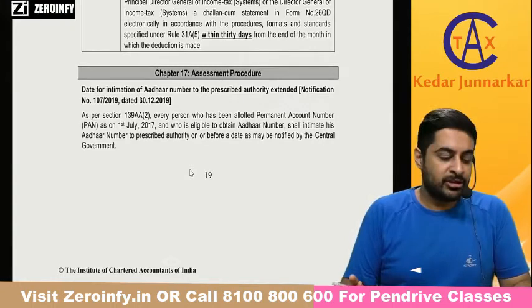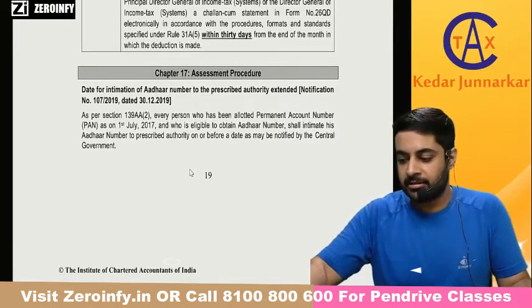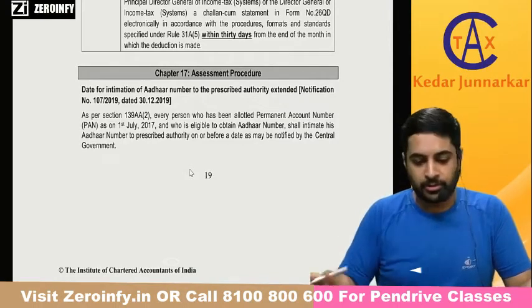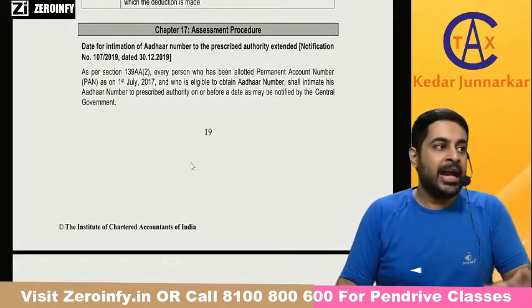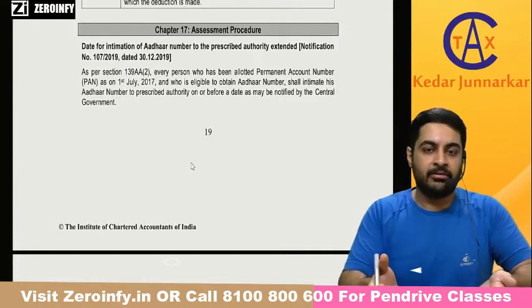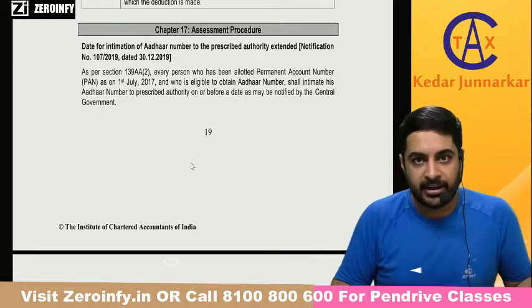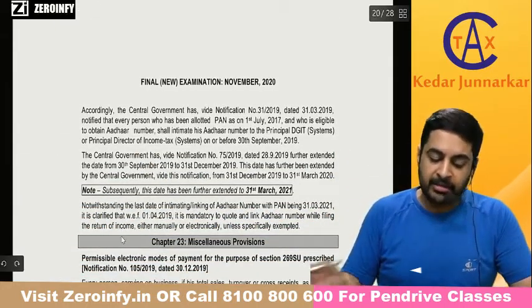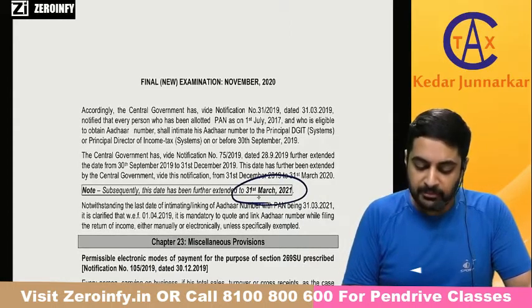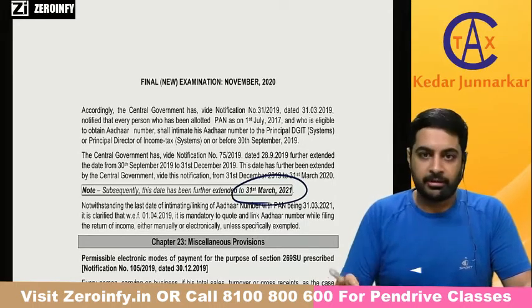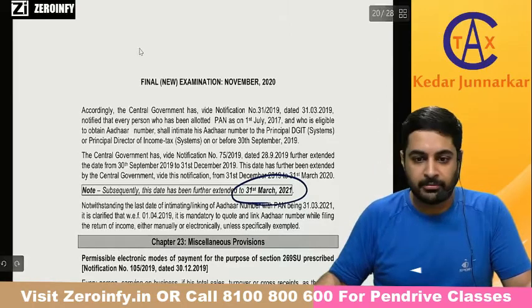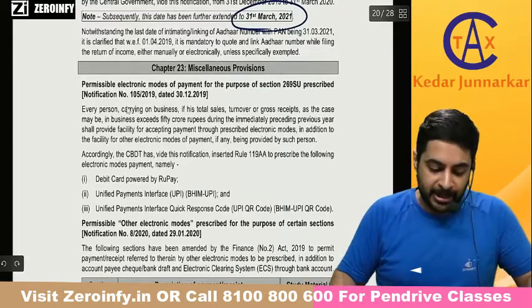Aadhaar-PAN linking: Under Section 139AA, Aadhaar and PAN must be linked. If not linked, PAN becomes ineffective; once linked later, it becomes effective again. The deadline has been extended multiple times — from 30th September, 31st December 2019, 31st March 2020 — and the latest extended deadline is 31st March 2021. All PAN and Aadhaar must be linked by 31st March 2021.